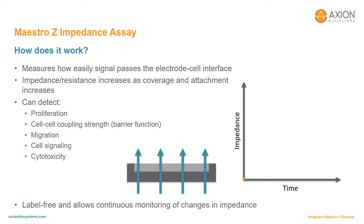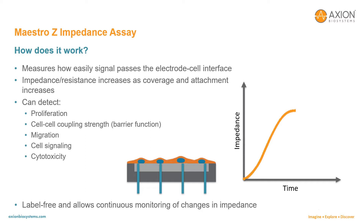To measure impedance, small electrical currents are delivered to electrodes embedded in the cell culture substrate. Before cells are added, the electrical current easily passes and the impedance is low. When cells are present and attached to the substrate, they block these electrical currents and are detected as an increase in impedance. Impedance is also sensitive to subtle changes in cell conformation, such as those caused by receptor-mediated signaling or cell morphology.